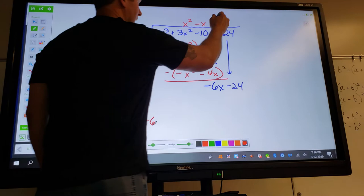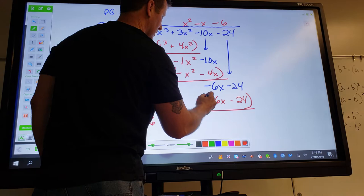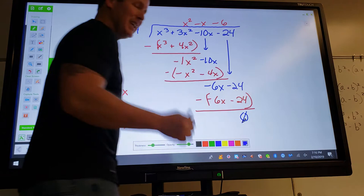Negative six is written up here and I repeat that multiplication process and subtract. Now because I subtract, that will cancel, that will cancel, and my remainder is zero.